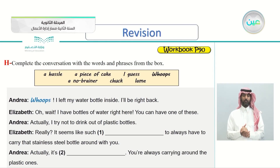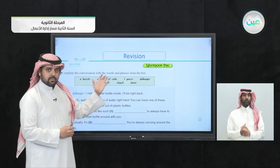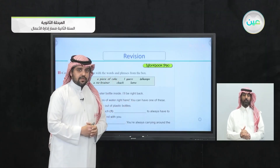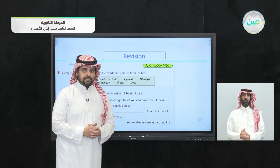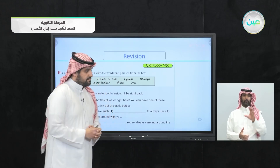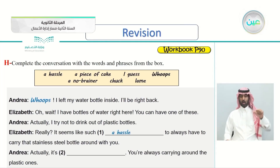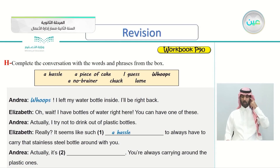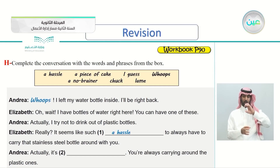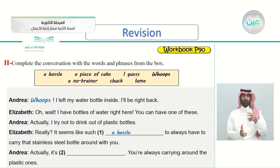So which of these words do we choose to fill the first gap? Answer number one is 'a hassle.' So Elizabeth says: 'Really, it seems like such a hassle to always have to carry that stainless steel bottle around with you.' Then Andrea says: 'Actually, it's...' and the second gap follows: 'you're always carrying around the plastic ones.'